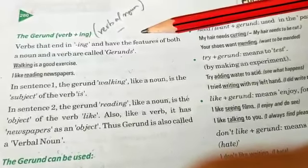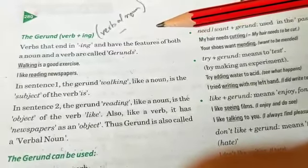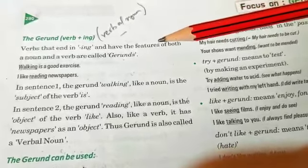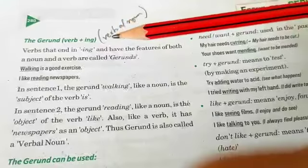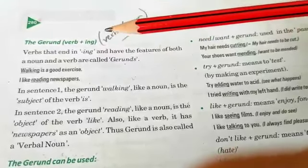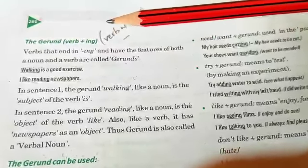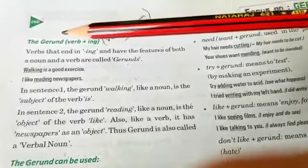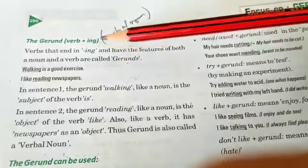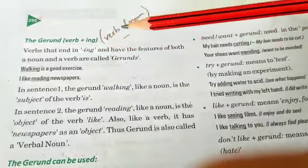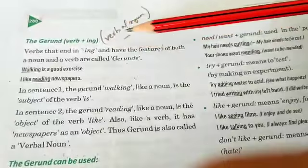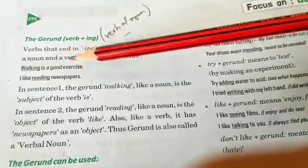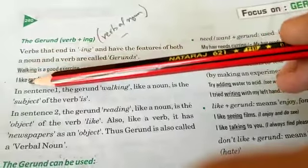Class 8, this is your topic: non-finites, third video. We are going to discuss the gerund, the second form of non-finite verb. What is a gerund? Gerund is verb plus -ing, and it is also called a verbal noun because it has the quality of a verb as well as of a noun. For example, 'walking is a good exercise' — here 'walking' is a gerund.